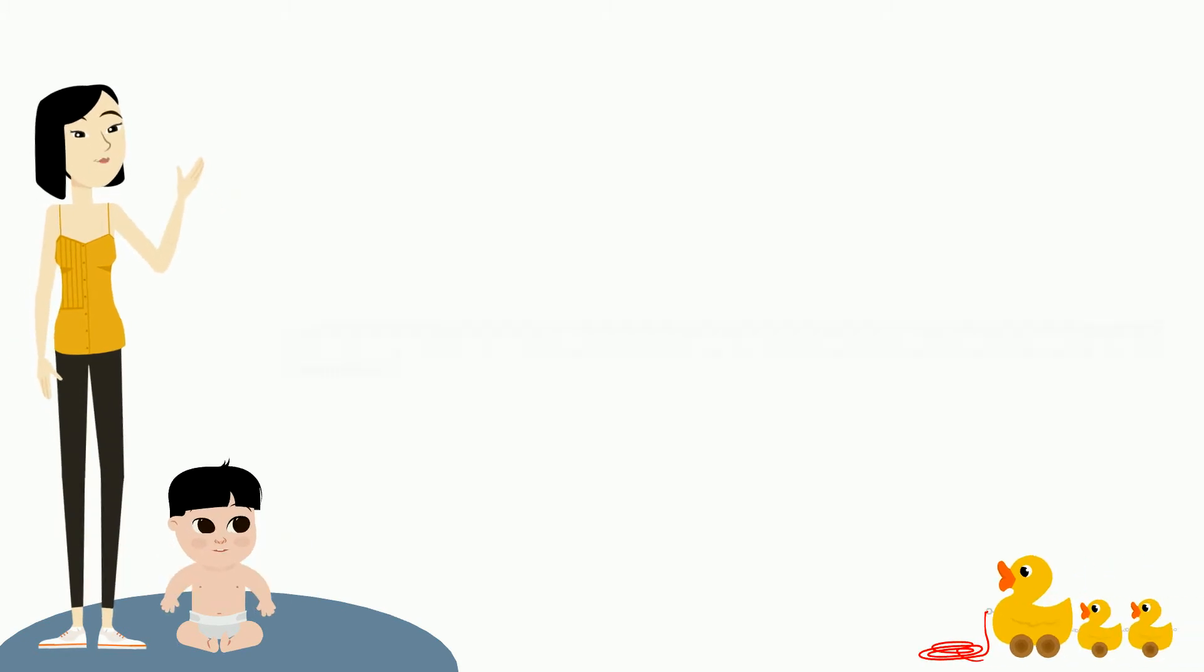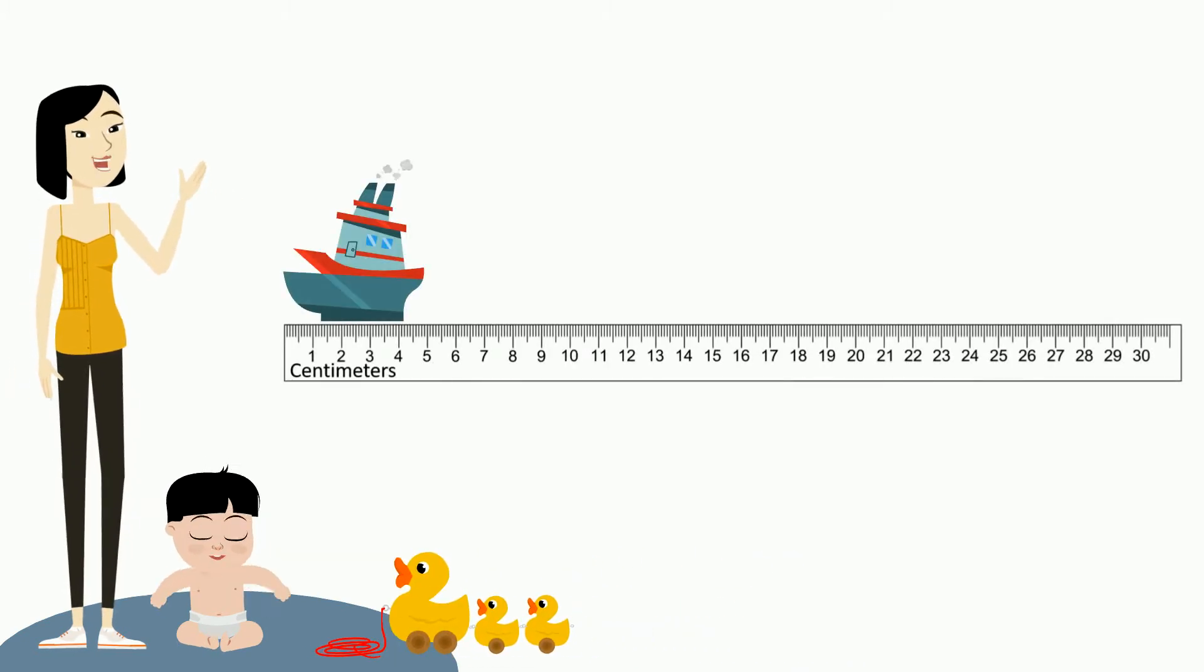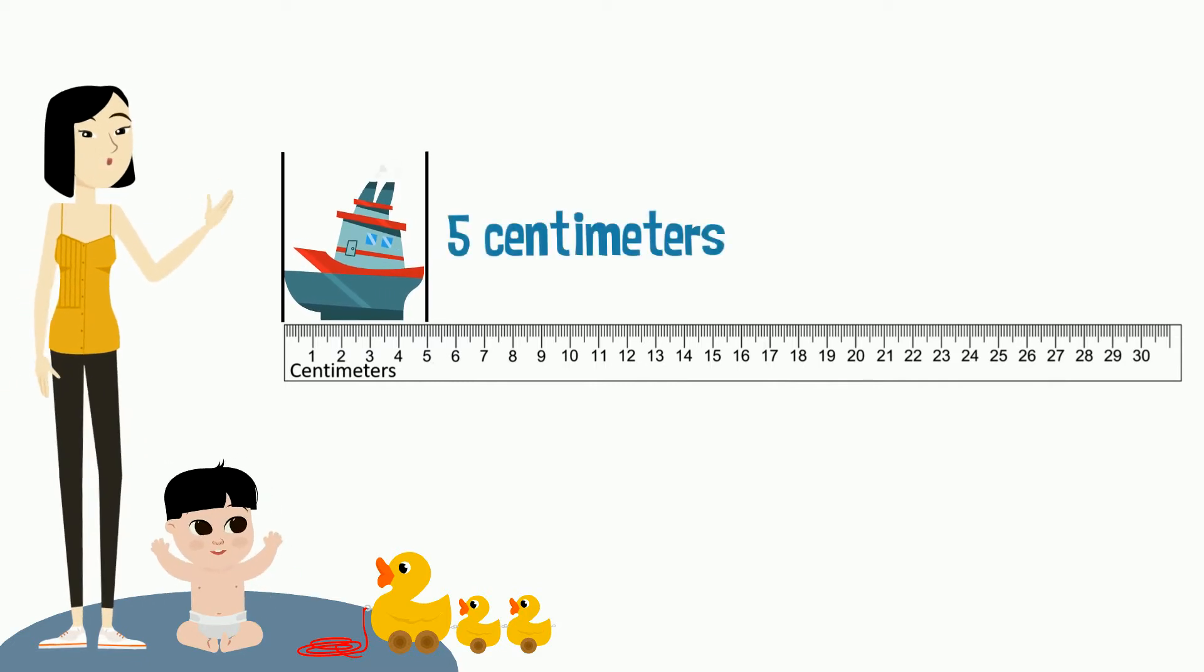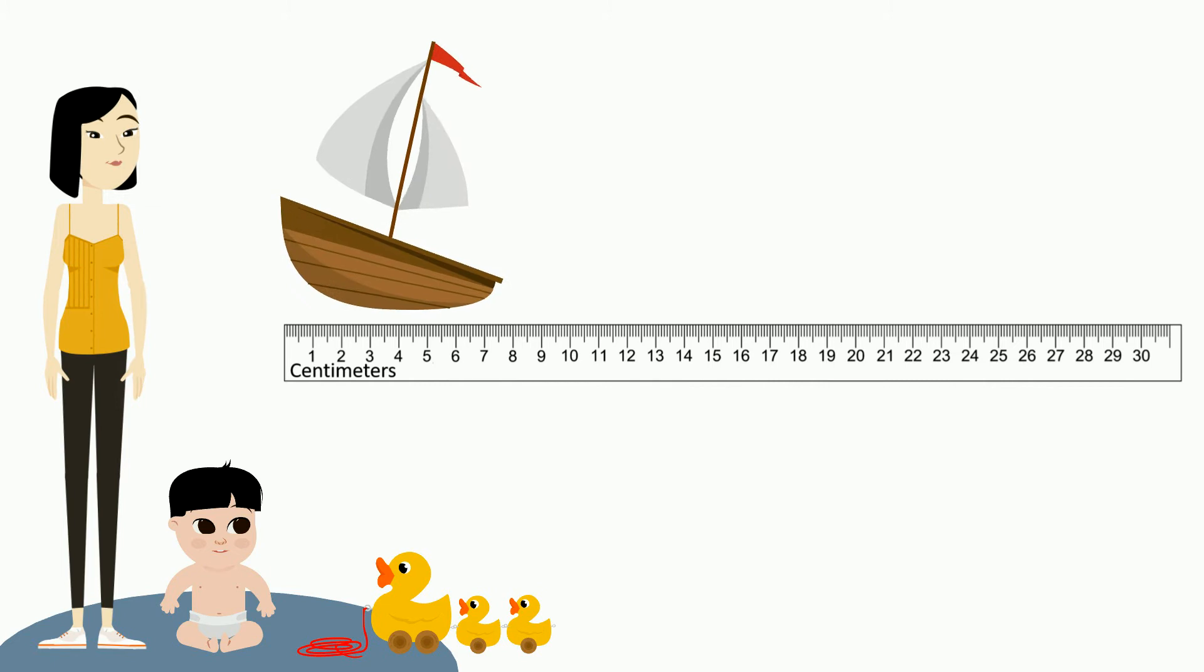Let's measure each boat. I see that the first boat is five centimeters long. Now let's look at the second boat. This boat is eight centimeters long, but how can I compare the lengths?